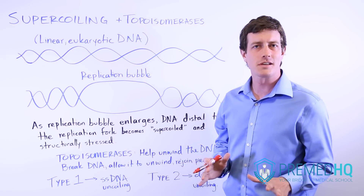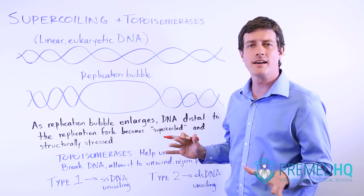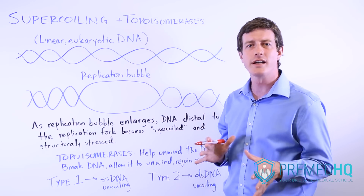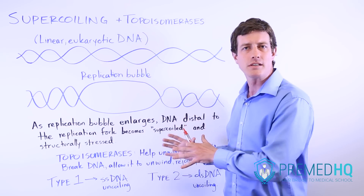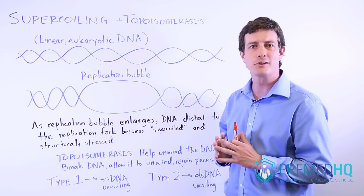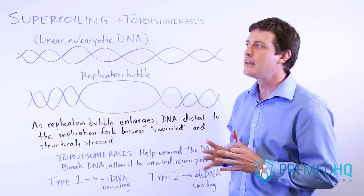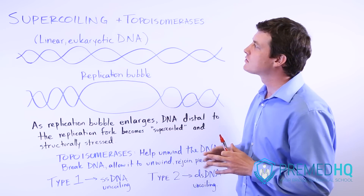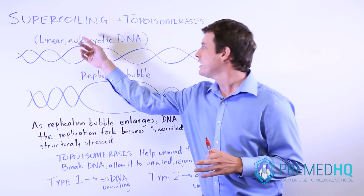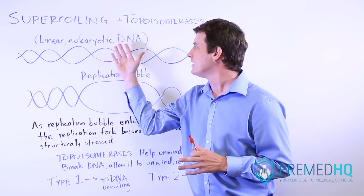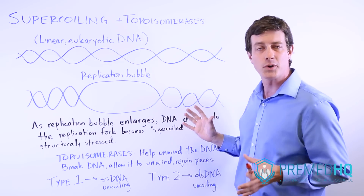This video concerns something that is testable on the MCAT, but if it appears, it's more likely to show up as a passage-based problem rather than something they're testing you on explicitly. It deals with an interesting feature of the linear DNA that you encounter in eukaryotic cells, and it's called supercoiling.